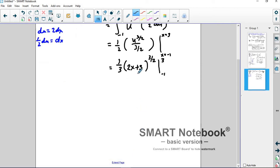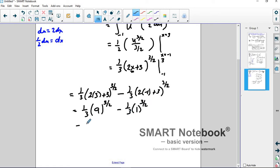Now, I can plug in because this is x and these are x's. So, let's evaluate 1 third (2 times 3 plus 3) to the 3 halves minus 1 third (2 times negative 1 plus 3) to the 3 halves. 3 halves is the square root and then cubed. So, this is 9 square root cubed and this is 1 square root cubed. And so here we get 1 third times 27 minus 1 third times 1. 9 minus 1 third is 26 thirds.